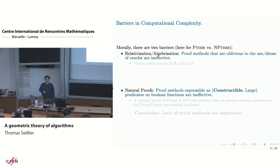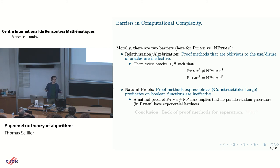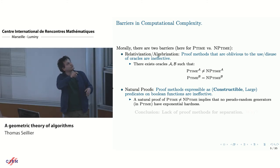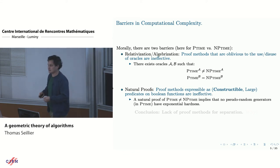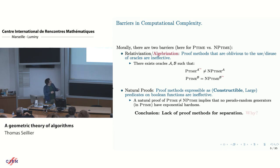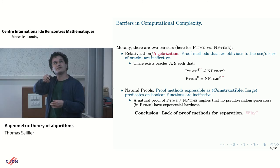The first barrier is called relativization. It comes from a result of 1975. It's about what happens to the P versus NP problem when you use oracles. It turns out you can find two oracles such that the problem becomes solvable — in one case it's an equality, in the other it's an inequality. This means that if your proof method doesn't see the oracle, then it cannot prove that the classes are equal or disjoint.